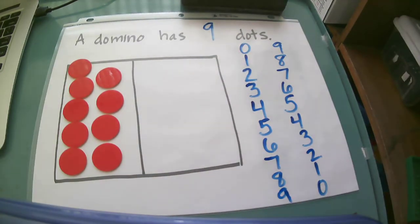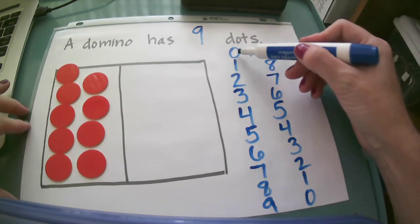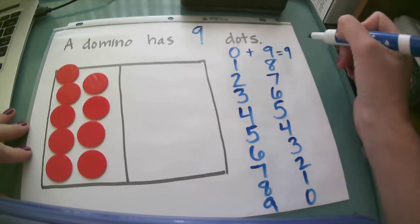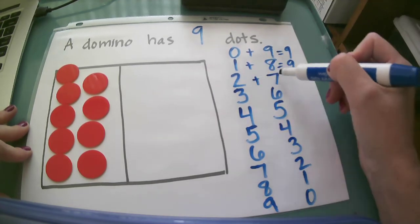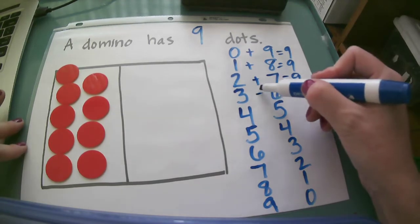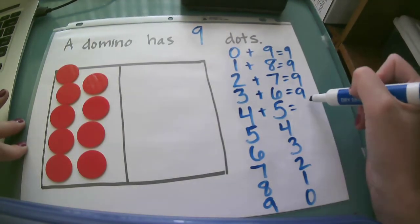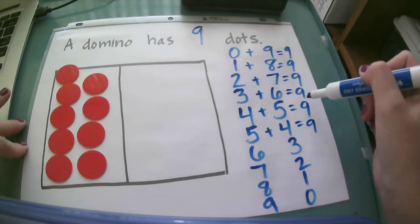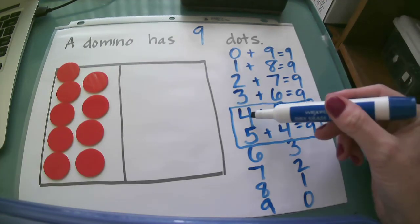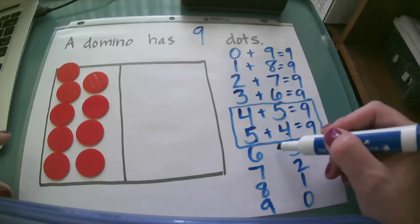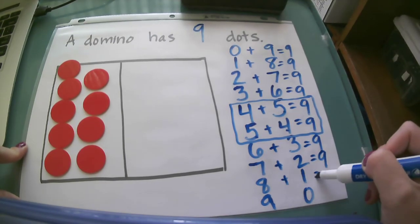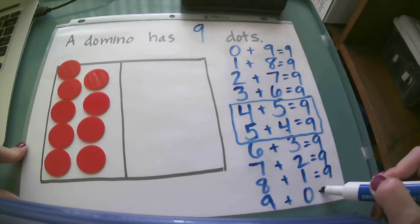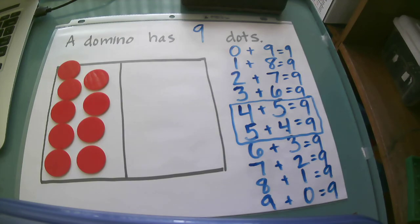Now I could check my number partners by thinking about combining them — thinking about those number sentences. If I put together or join zero and nine I should get nine. If I combine or join one and eight, again I should get nine. Two and seven gives me nine because they're number partners for nine. You can see these two facts right here look very similar, except the four comes first and then the five, and then the five and then the four. Seven and two together give me nine, eight and one together give me nine, and nine and zero give me nine. And these are the number partners for the number nine.